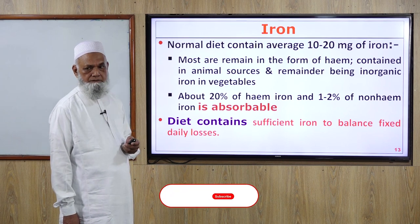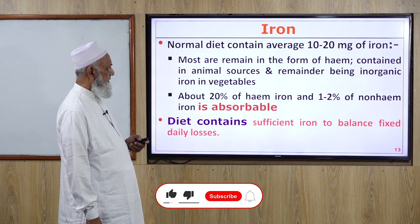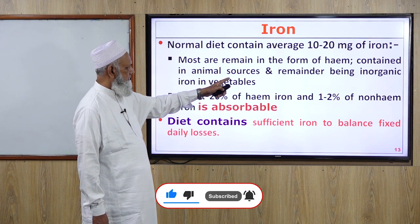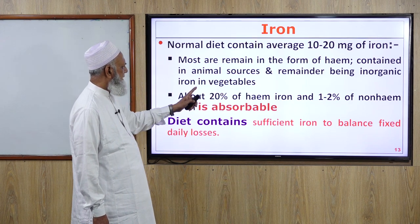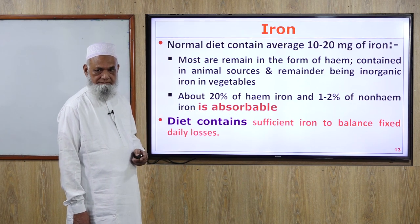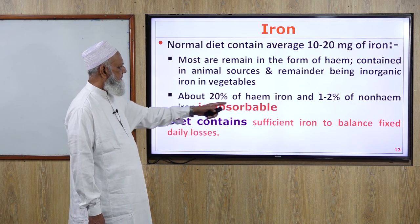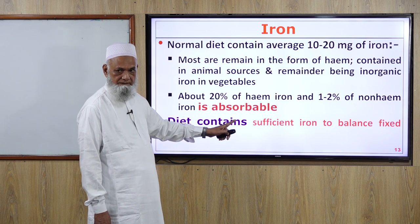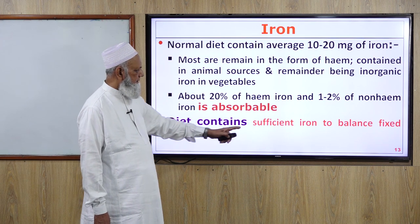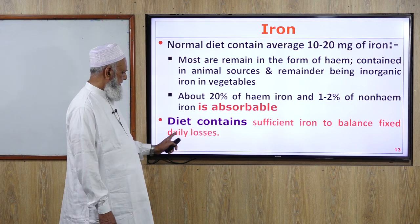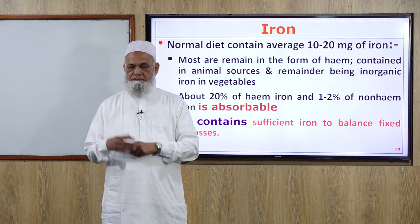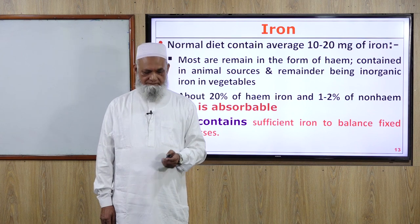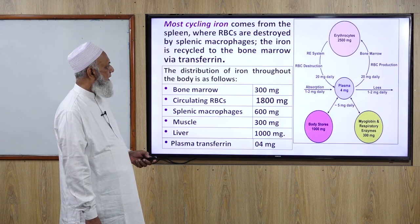Normal dietary content averages 10 to 20 milligrams of iron. Most remains in the form of heme contained in animal sources, with the remainder being inorganic iron contained in vegetables. About 20 percent of heme iron and 1 to 2 percent of non-heme iron is absorbable. Diet contains sufficient iron to balance the fixed daily loss of 1 to 2 milligrams.